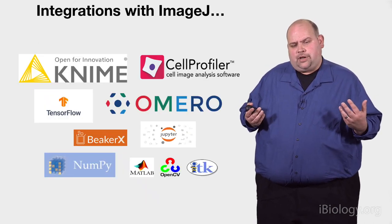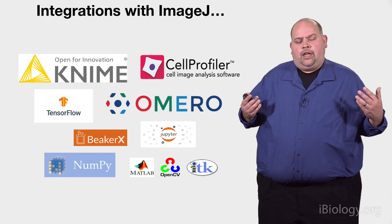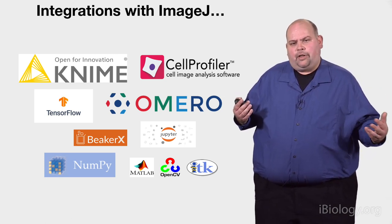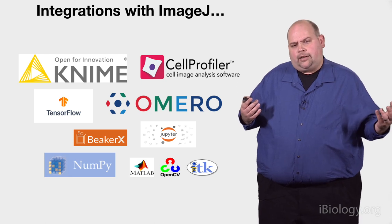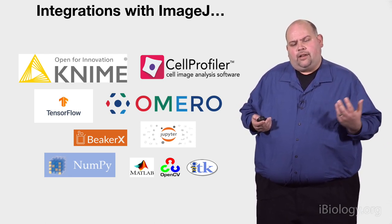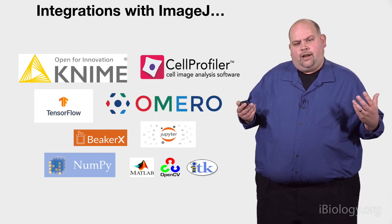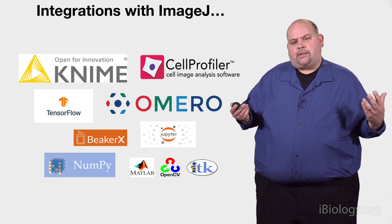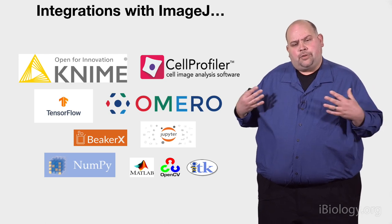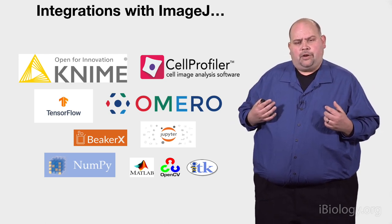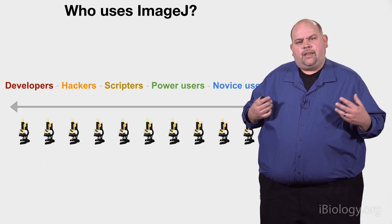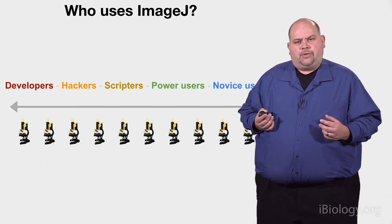We've worked hard in ImageJ to interoperate and have integrations with many other tools, including CellProfiler, KNIME, Omero, and libraries such as NumPy and ITK. The idea is to create a unified resource where we all work together — and this is seen not only in the code, but also in the forum, where users and developers can ask questions online and work together.